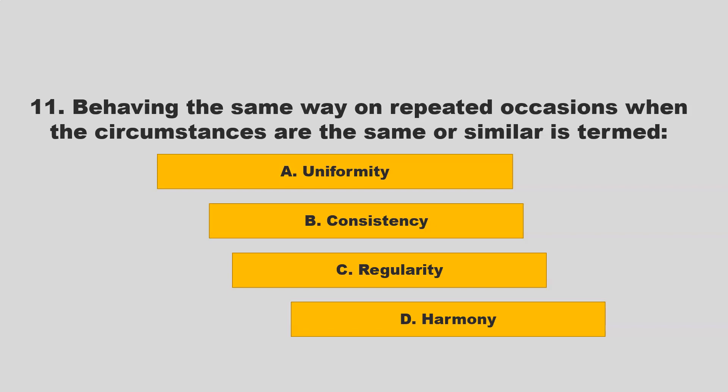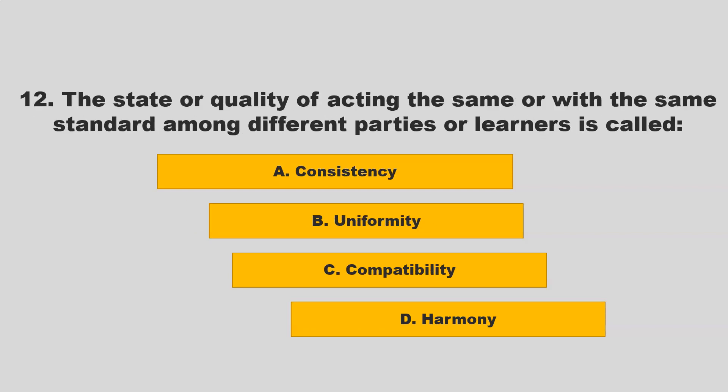Behaving the same way on repeated occasions when the circumstances are the same or similar is termed consistency. Other options included uniformity, regularity, and harmony. If you chose B, consistency, you are correct.